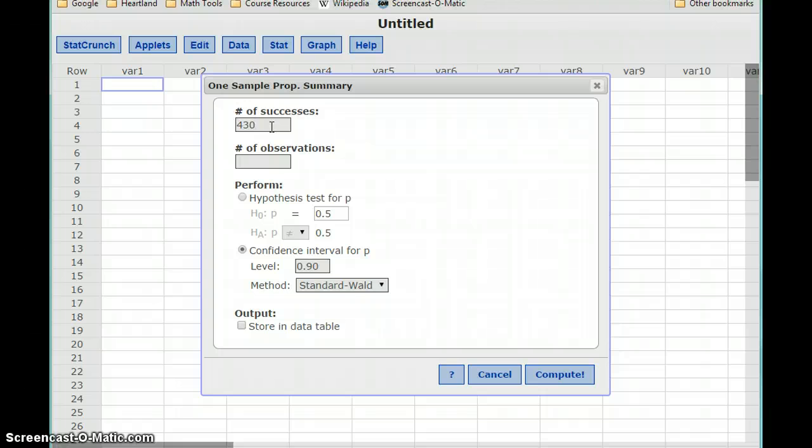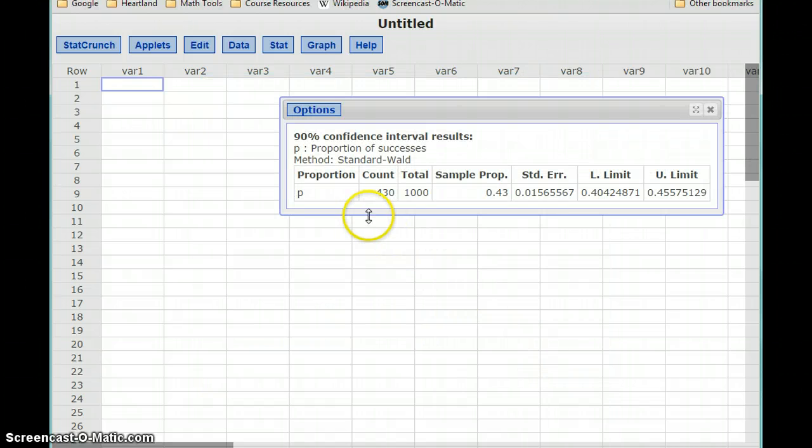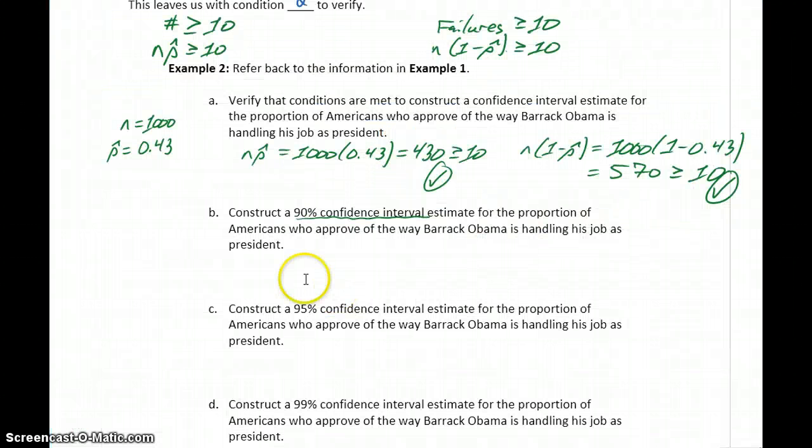We had 430 successes out of 1,000 total observations. We enter those two values, set our confidence level, and click Compute. This gives us the count and total that we input, the sample proportion which matches what we had before, and then our lower limit and upper limit. These are the upper and lower bounds of our confidence interval that we want to report. We can report this as 0.4042 and 0.4558. That's our 90% confidence interval estimate.